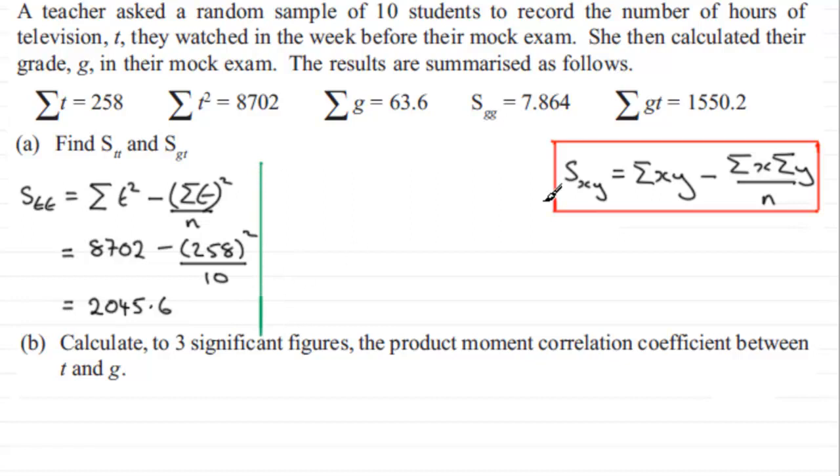Now we just need to go on and work out what sgt is. So sgt is going to equal, well again looking at this formula here, you can see that the x is now replaced with the g and the y is replaced with a t. So we get sigma gt here, sigma gt, and then minus sigma g times sigma t, sigma g times sigma t, and that's all divided by the number of observations n.